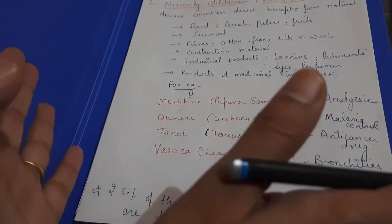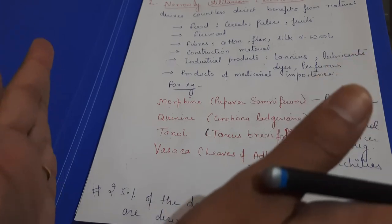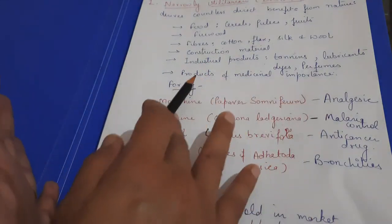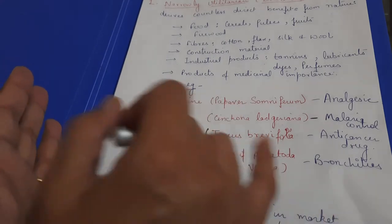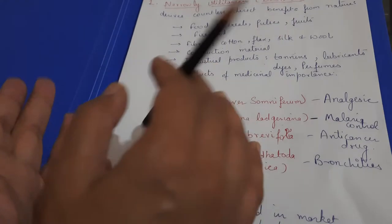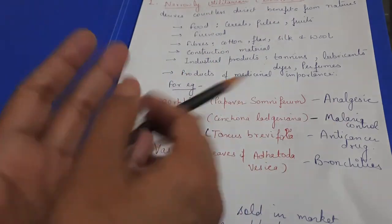25% of the drugs which are sold in market they are derived from plants. We have different kinds of drugs and medicines like cancer, anti-cancer drug, malaria control, bronchitis, analgesic.